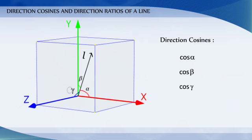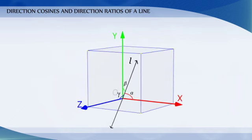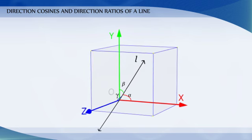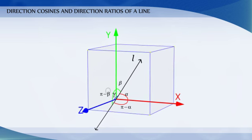If the direction of the line L is reversed, then the angles are replaced by their supplements: pi minus alpha, pi minus beta, and pi minus gamma.